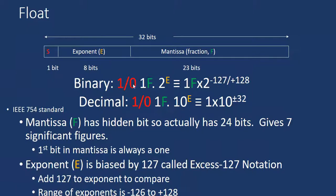If we convert to decimal, we get the sign bit then 1.f × 10^exponent. The range is 1.f × 2^(-127 to +128), or in decimal approximately 1 × 10^(±32). Mantissa has a hidden bit, so it is actually 24 bits - 23 bits shown and 1 bit by default added - giving maximum 7 significant figures.